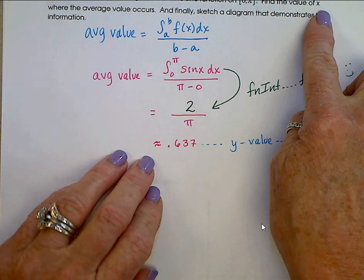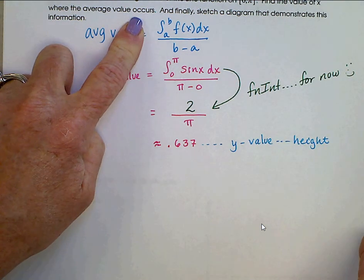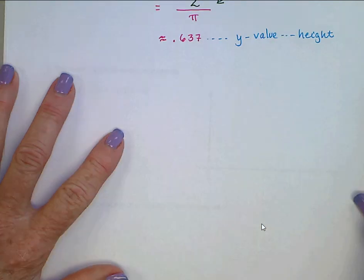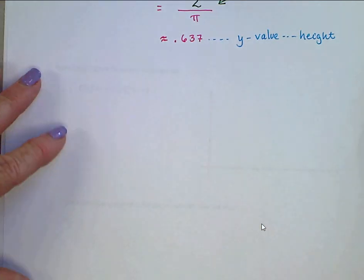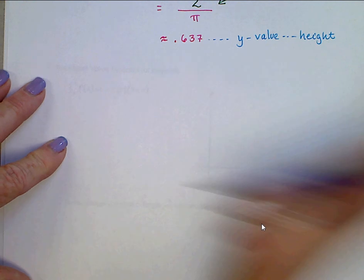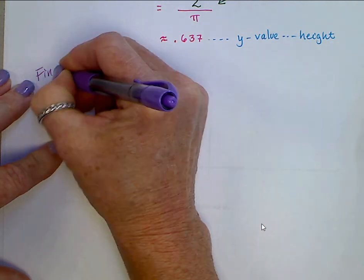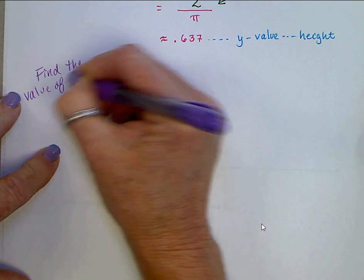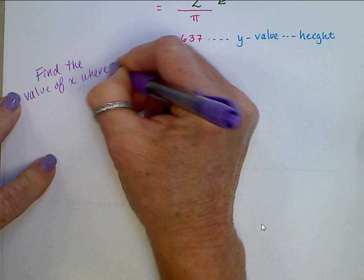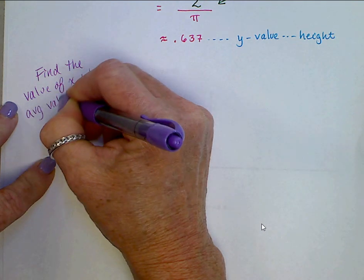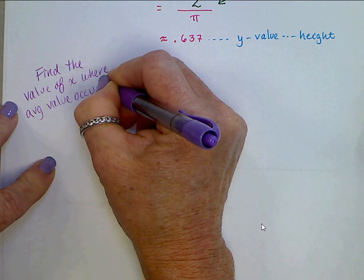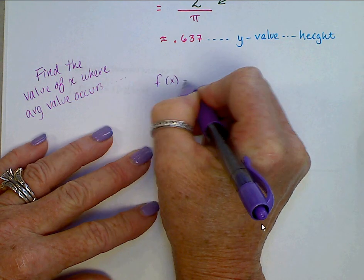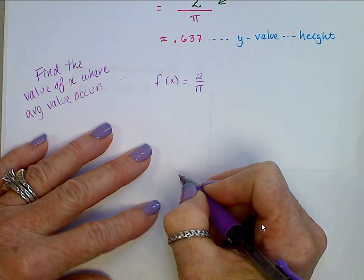Find the value of x where that average value occurs. This is a y value. Remember, it's a height. So for the next part, where it says, find the value of x where the average value occurs, that's, we want to know where f of x is equal to 2 over pi.